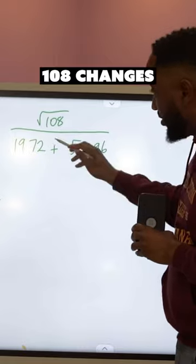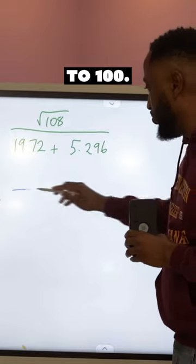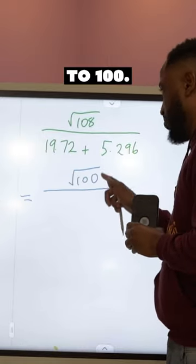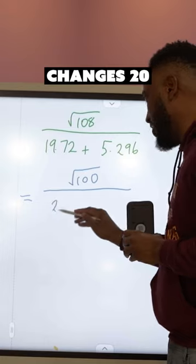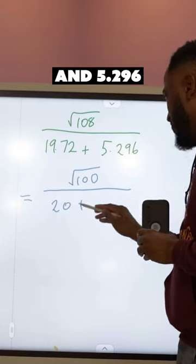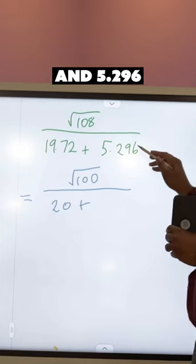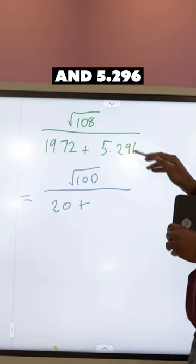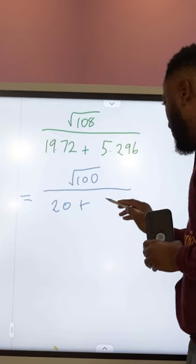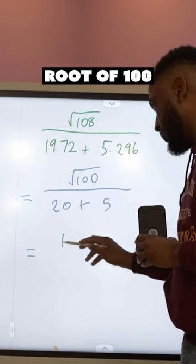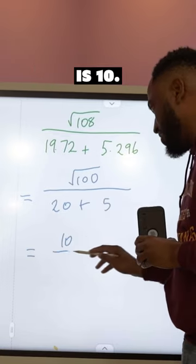108 changes to 100. 19.72 changes to 20. And 5.26 changes to 5. The square root of 100 is 10.